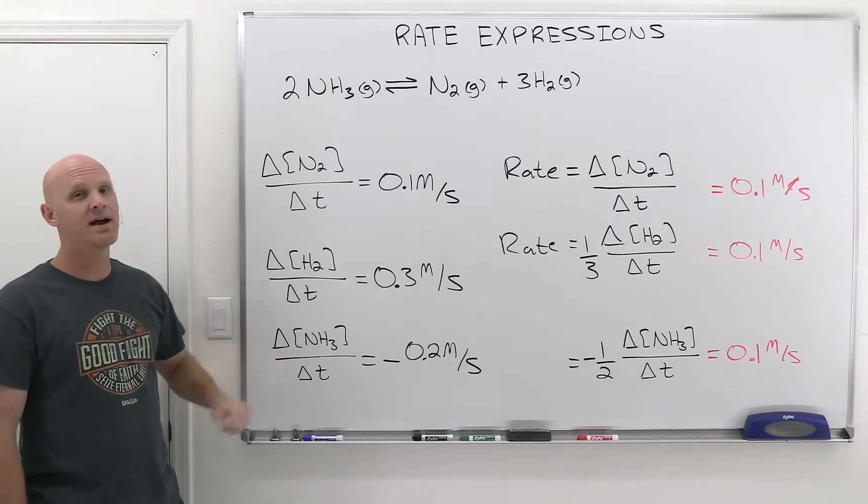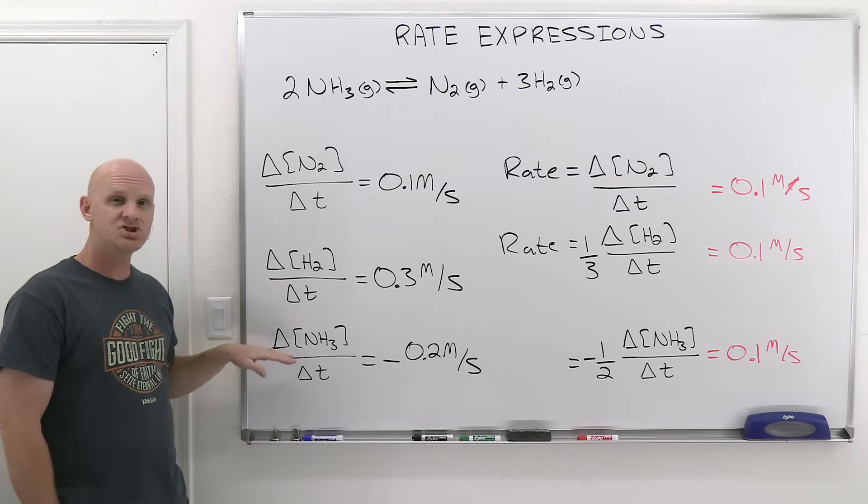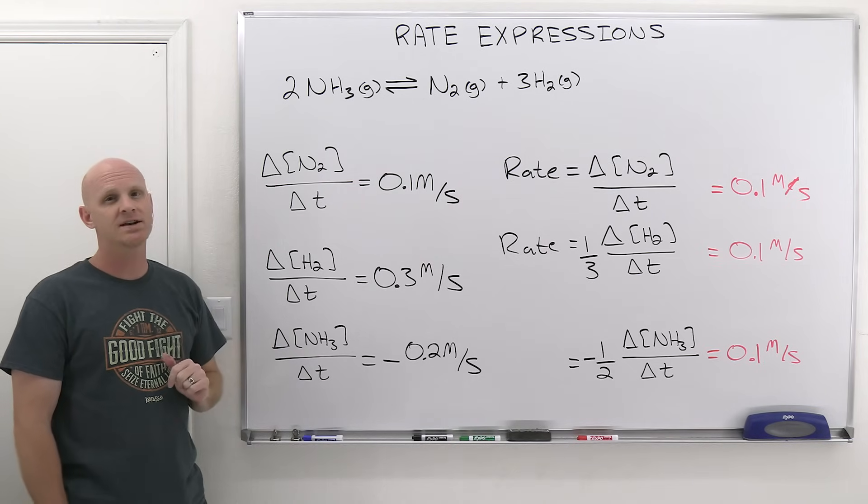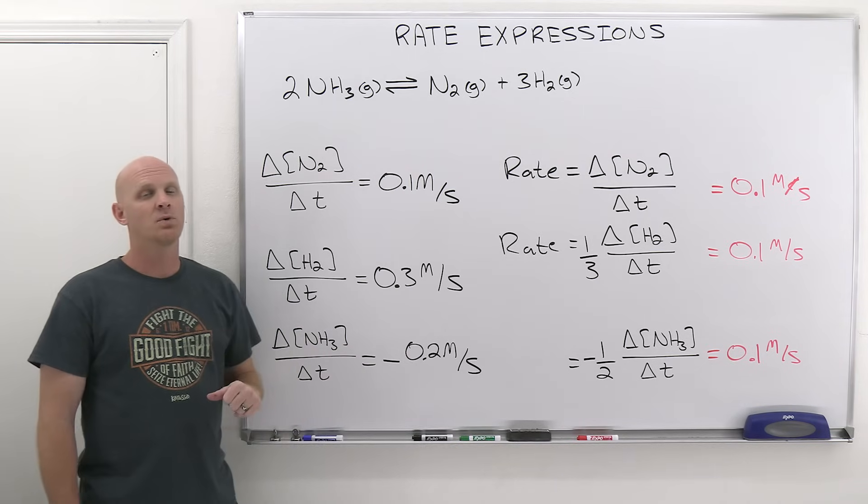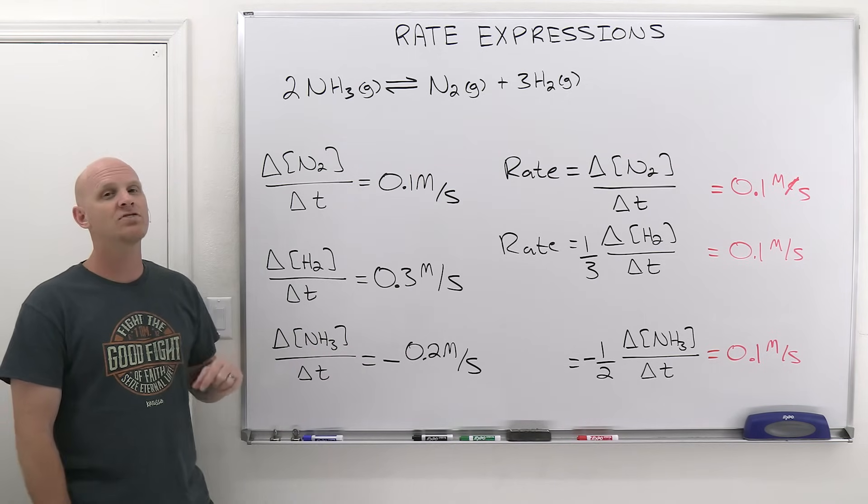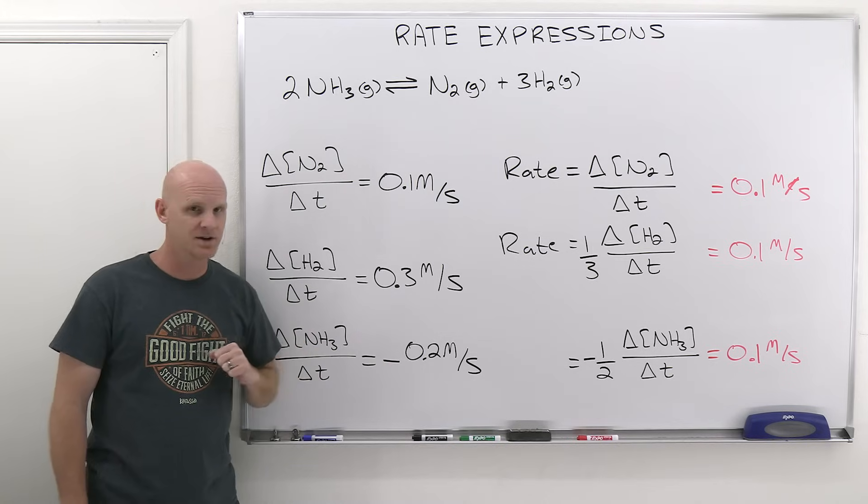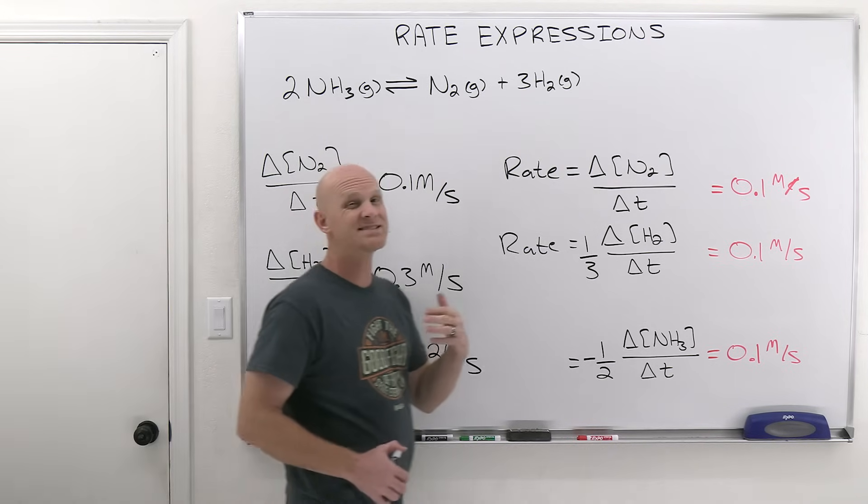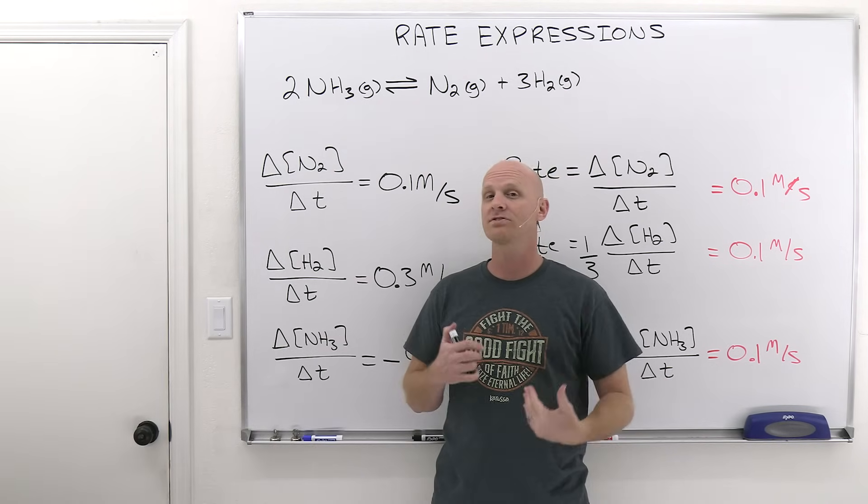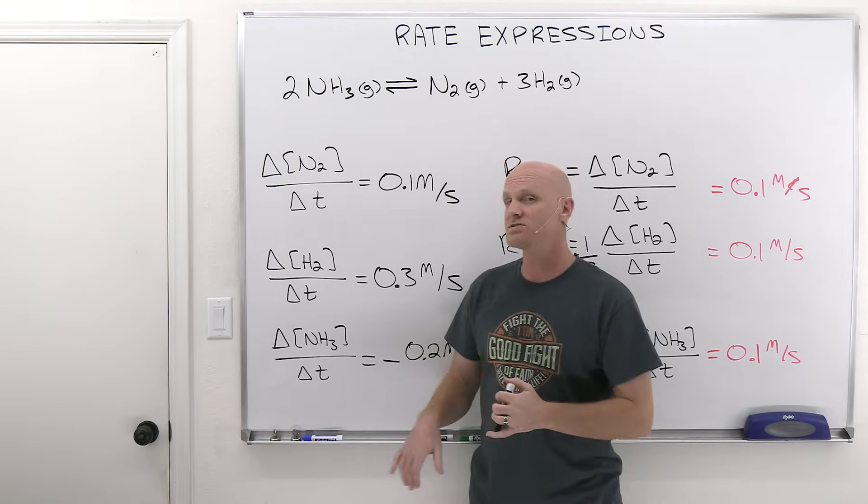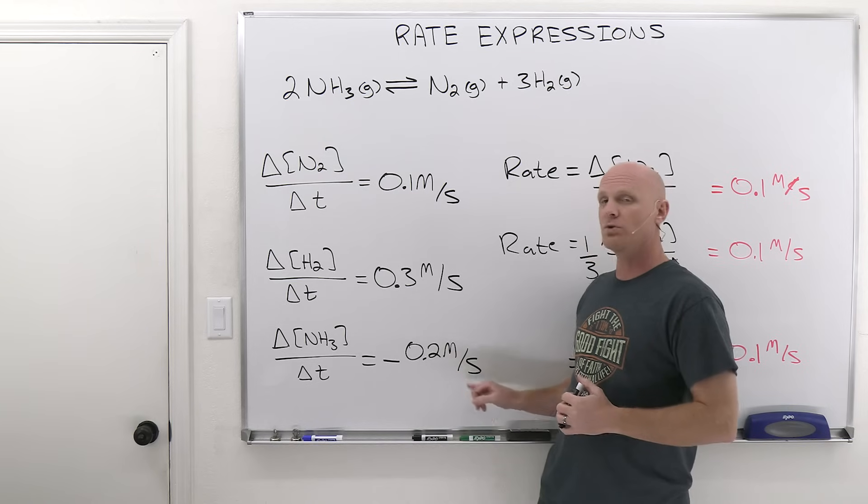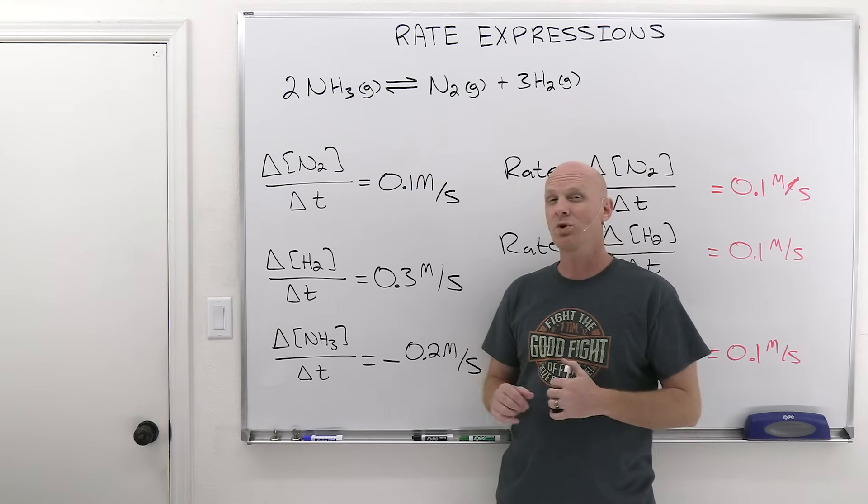If I said what is the rate of change for the concentration of NH3 over time, it would be negative 0.2 molar per second. But what if instead of saying the rate of change, what if I said the rate of consumption? This is where you've got to be careful. If I say rate of consumption, that means I already know that that concentration is going down. It's being consumed, it's being used up. So the rate of consumption is not negative 0.2 molar per second, it's just 0.2 molar per second.